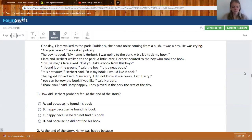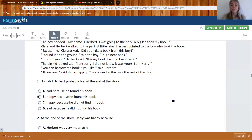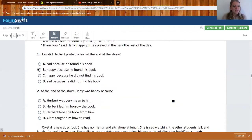How did Herbert probably feel at the end of the story? Do you think Herbert was sad because he found his book, happy because he found his book, happy because he did not find his book, or sad because he did not find his book? We can get rid of two answers, and those would be A and D, because he was pretty happy by the end. Remember, Herbert is the one who lost the book. So would he be happy because he found his book, or happy because he did not find his book? The answer is B, happy because he found his book. Think about it. If you lost something, you'd be pretty happy too, right?